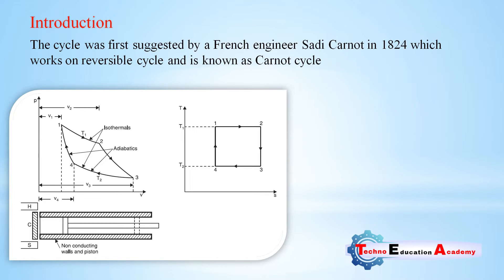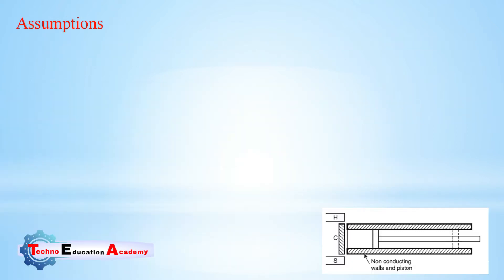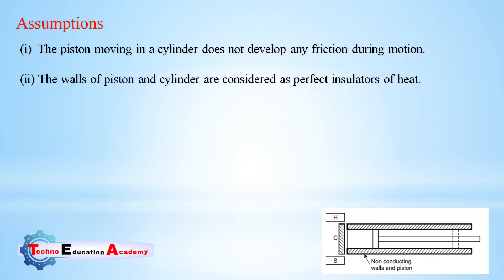This cycle has the highest possible efficiency and consists of four simple operations: isothermal expansion, adiabatic expansion, isothermal compression, and adiabatic compression. There are various assumptions when we derive the equation of efficiency for the Carnot cycle. The first assumption is that the piston moving in a cylinder does not develop any friction during motion.